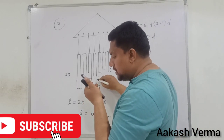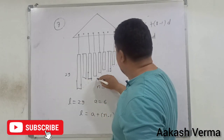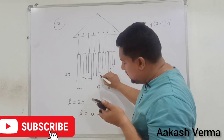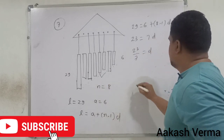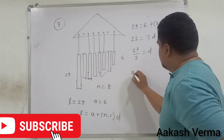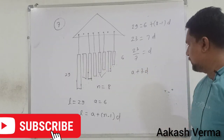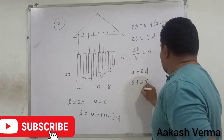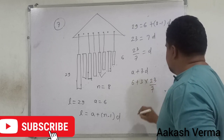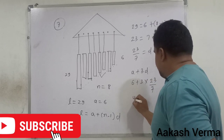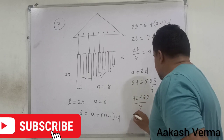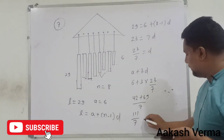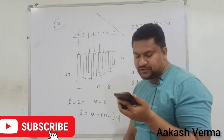Middle (4th) roll की length find करने के लिए: A + 3d = 6 + 3 × (23/7) = 6 + 69/7 = (42 + 69)/7 = 111/7। तो 111 divided by 7, option D is correct.